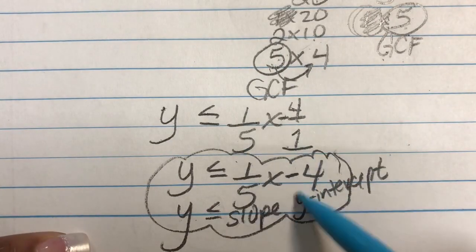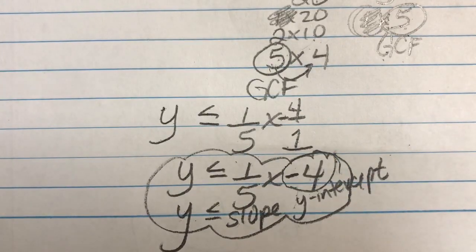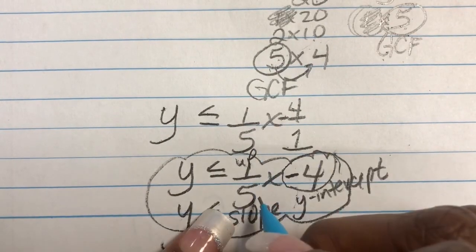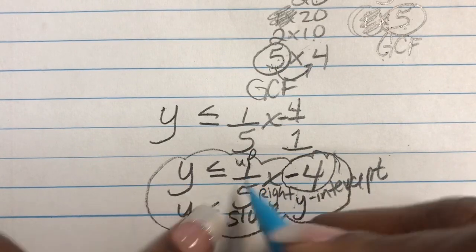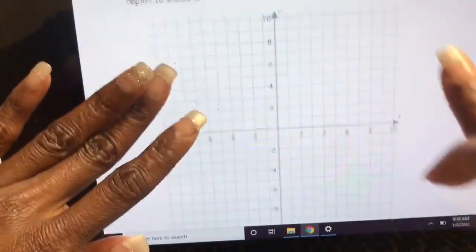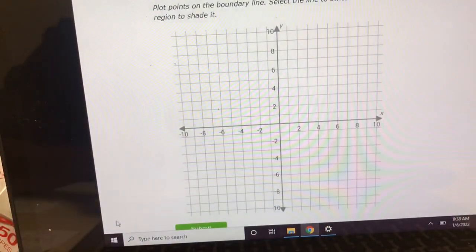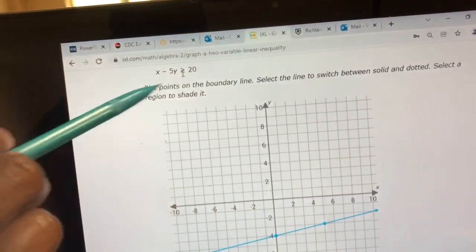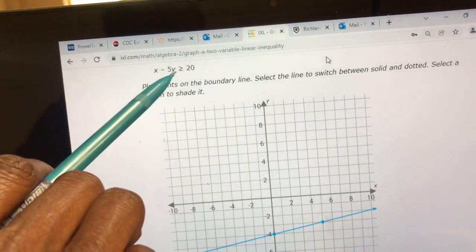So remember, in order to graph this, I have to put a dot at negative 4 and then go up 1 and to the right 5, since this is a positive slope. So let's do that. So I'm going to go back here, make it a little bit smaller. I'm going to put my dot at negative 4 on the Y-axis. Negative 4. I go up 1 and to the right 5. 1, 2, 3, 4, 5. Put my dot. And then the next thing I do is I determine if this line is dotted or solid. It's going to be solid because there is an equal to sign right up under the inequality.